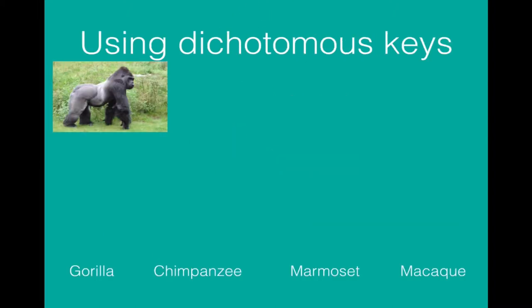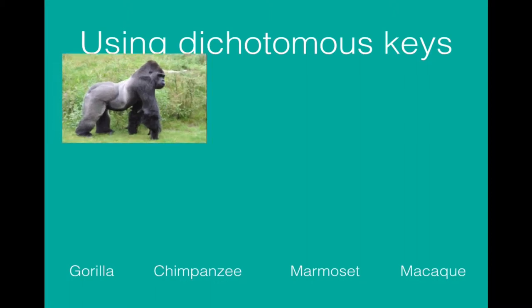Dichotomous keys consist of a series of yes or no questions allowing you to identify a species by working your way through those questions. At the end you will be able to identify the species this particular organism is. So let's look at an example.